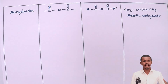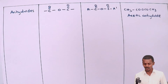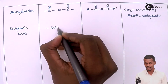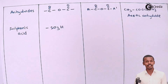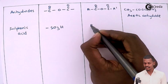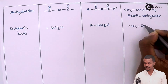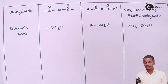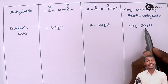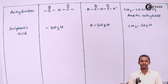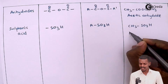The next class is sulfonic acids. Sulfonic acids are identified by the presence of the –SO3H group attached to the organic compound. The general formula is RSO3H. An example is CH3SO3H, where a methyl group is attached to the SO3H group, so the name is methyl sulfonic acid.